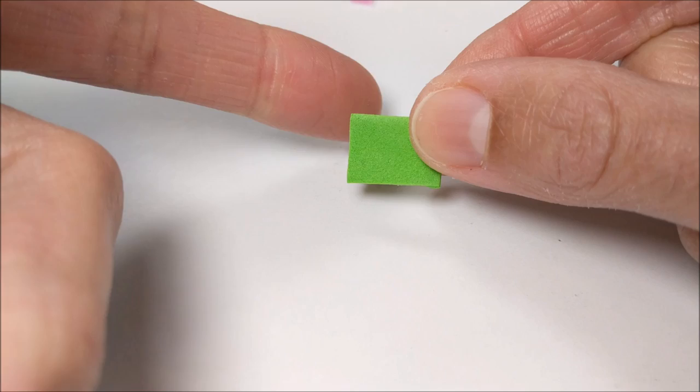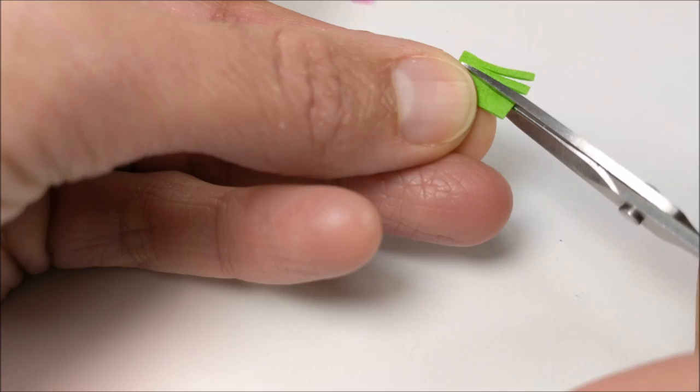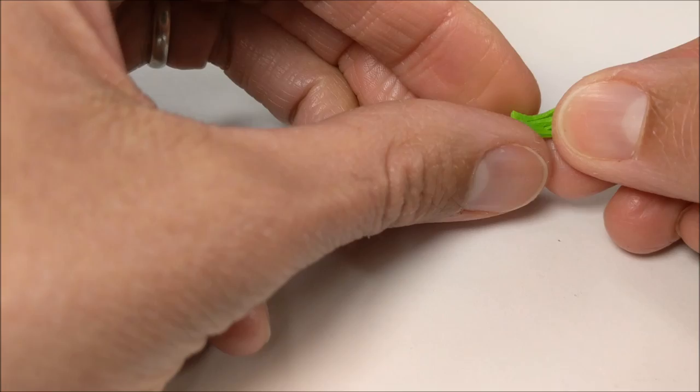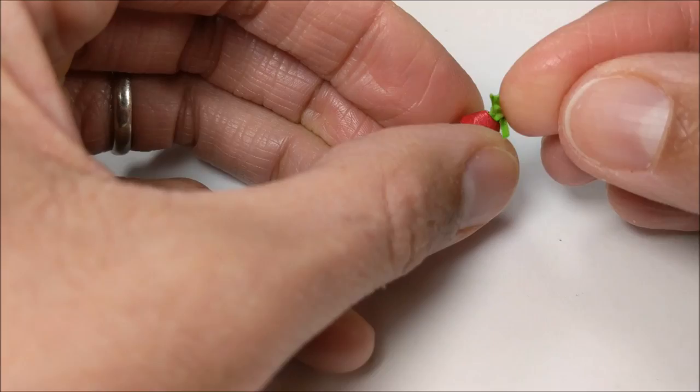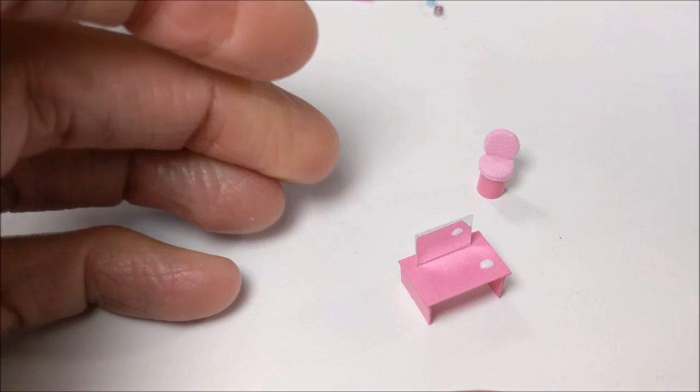And for details, I'm just using some tiny little beads. I take my super thin craft foam paper. I cut tiny little slits. I fold it over. And stick it inside of my bead. And when my vanity's dry, I'm just gluing tiny little beads as if they're like little bottles.